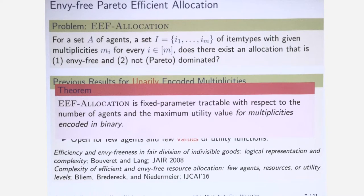Unfortunately, we weren't able to solve exactly this problem. We solved a similar problem, EF allocation, but not with respect to the different values in the utility functions, but with respect to the maximum utility value, which is slightly weaker. The parameters here for our results is the number of agents and the maximum utility, but on the other hand we allowed for high multiplicities encoded in binary.